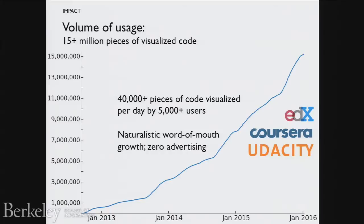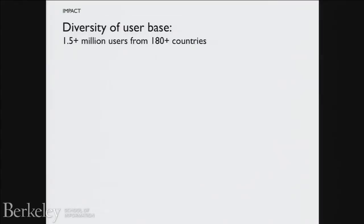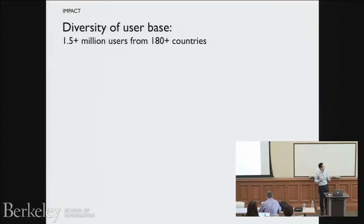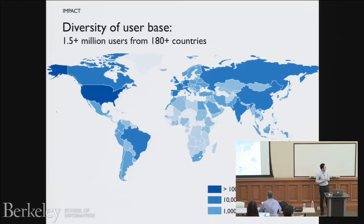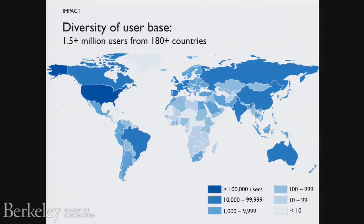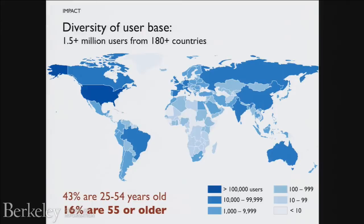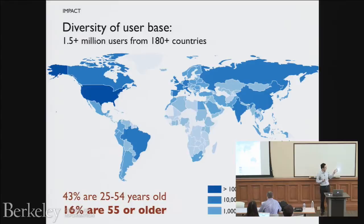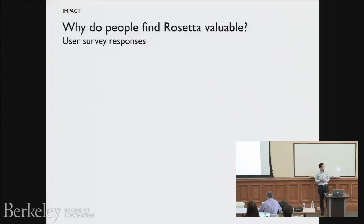Even more than pure numbers, the interesting piece of data is how diverse the user base is. There have been over one and a half million users total from pretty much every country. Over half the users are 25 or older, and 6% are 55 or older — a real international and cross-age, cross-demographic span. The user survey showed this. This will become an interesting platform for doing more detailed demographic studies in the future.